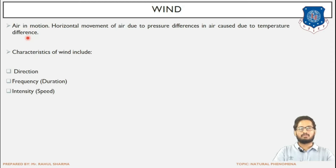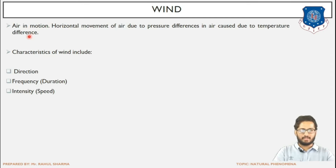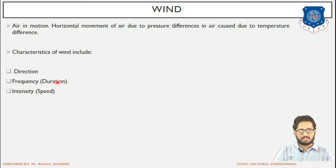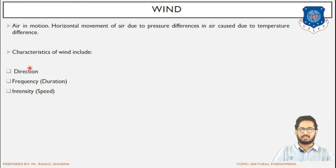A gradient is created to balance the zones with different pressure, and that creates the movement of air which is wind. Wind includes three characteristics: the direction — what is the specific direction of wind; the duration or frequency of the specific wind; and the speed or intensity. These are the three important parameters.